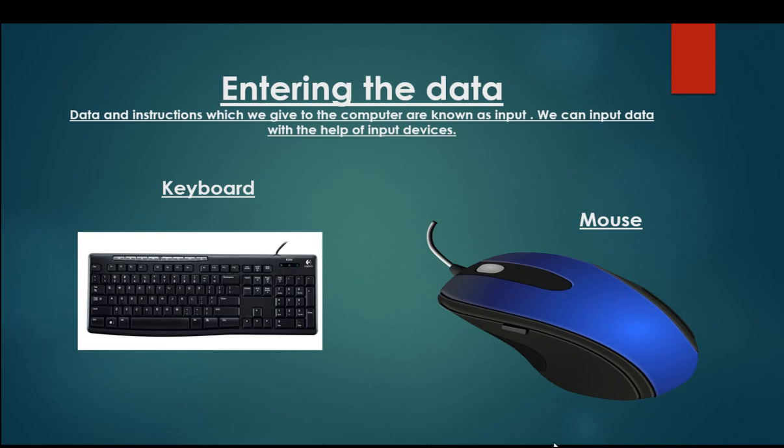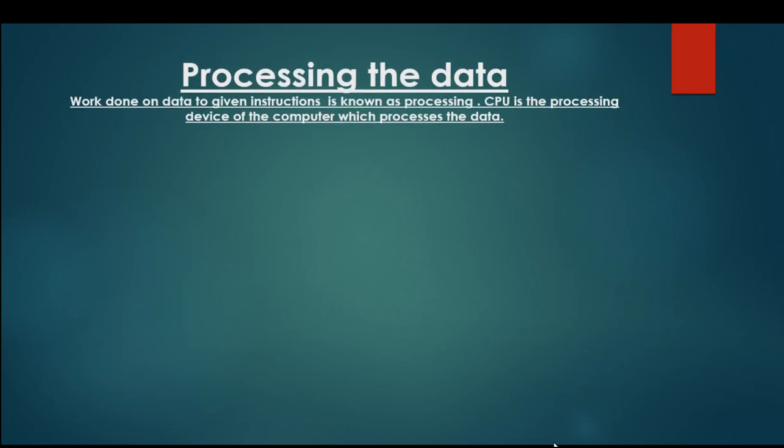These are our input devices. Now processing the data. Work done on data to given instruction is known as processing. CPU is the processing device of the computer which processes the data.